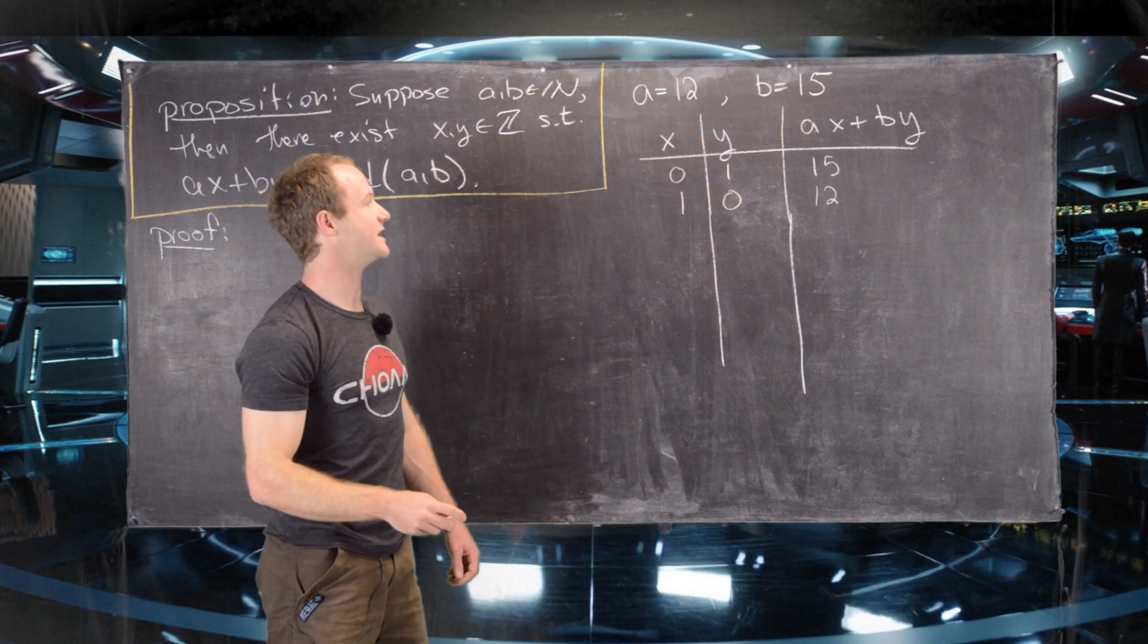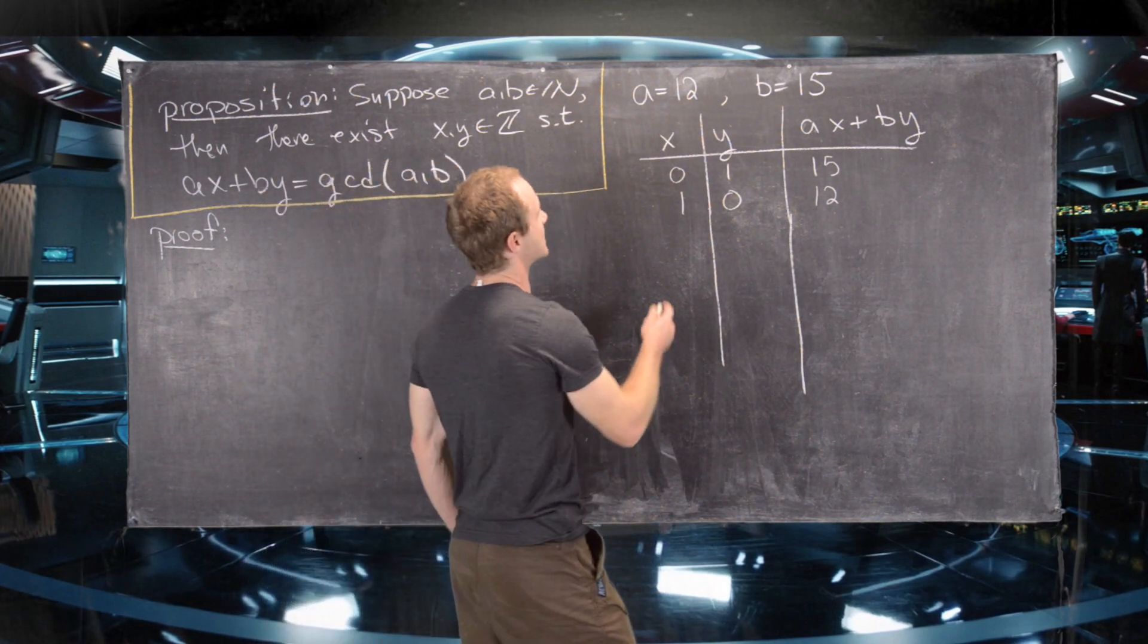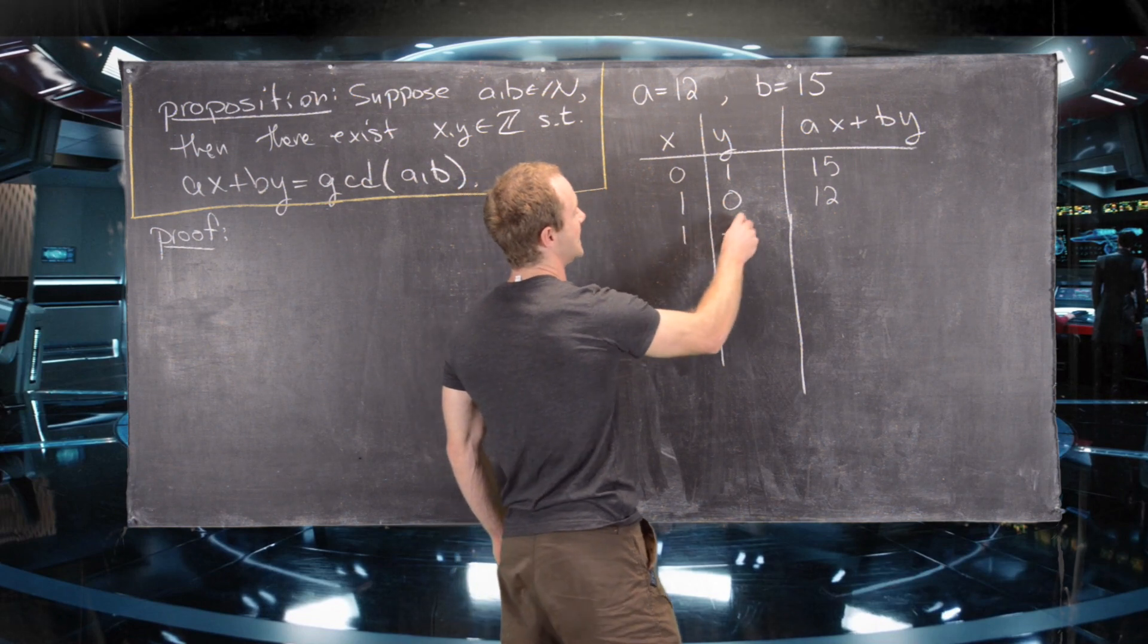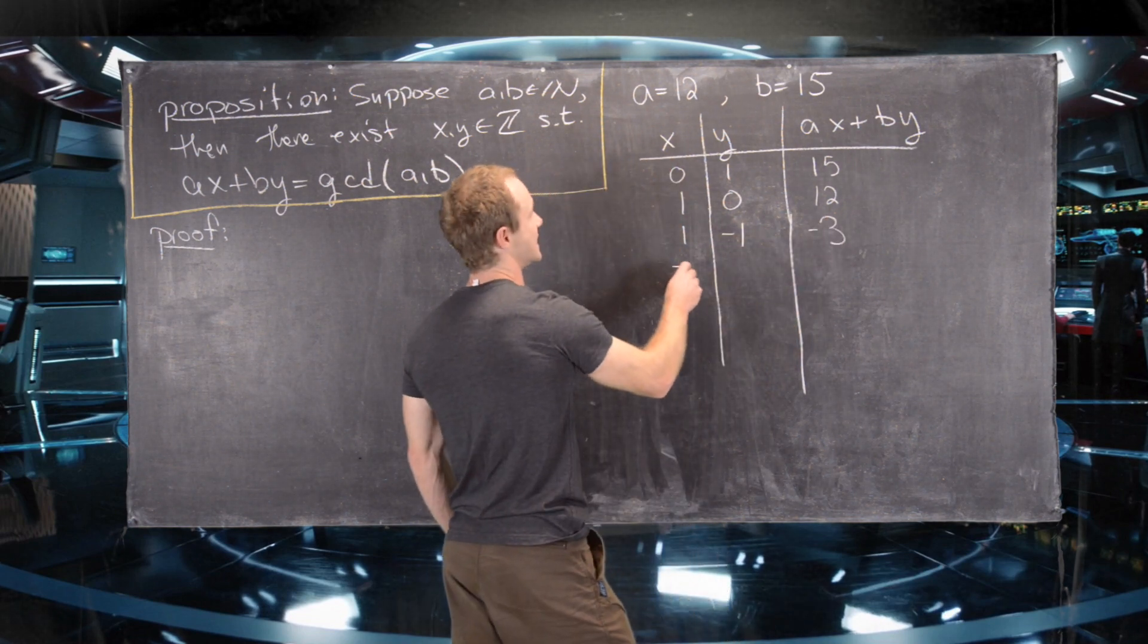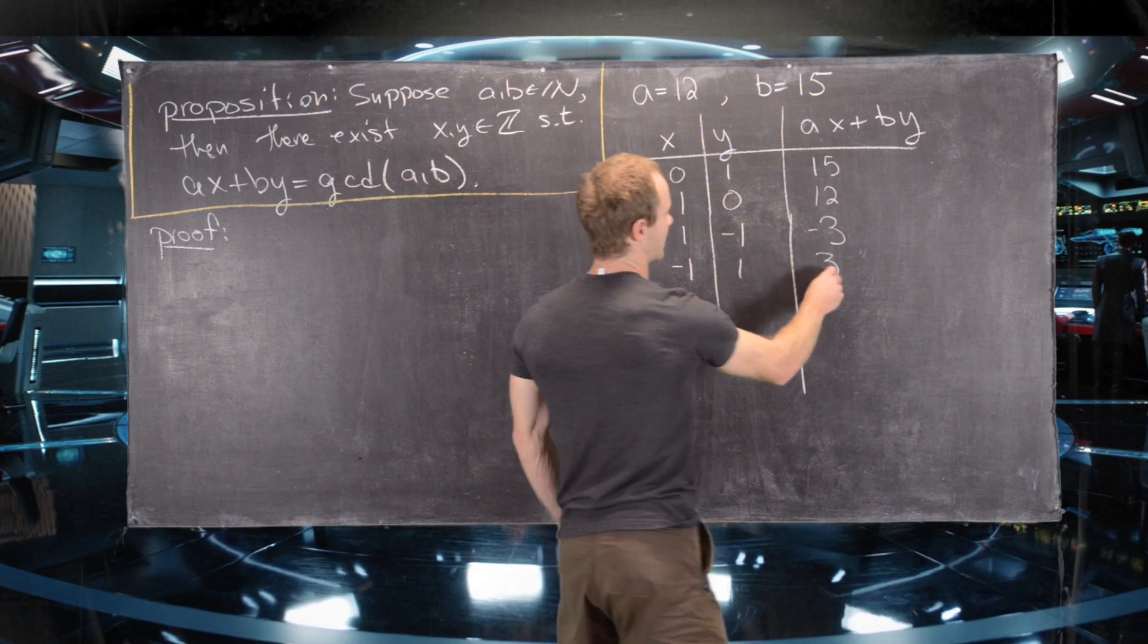And now let's look at some combinations. If we take 1, negative 1, that'll give us negative 3. If we take negative 1, 1, that'll give us 3.